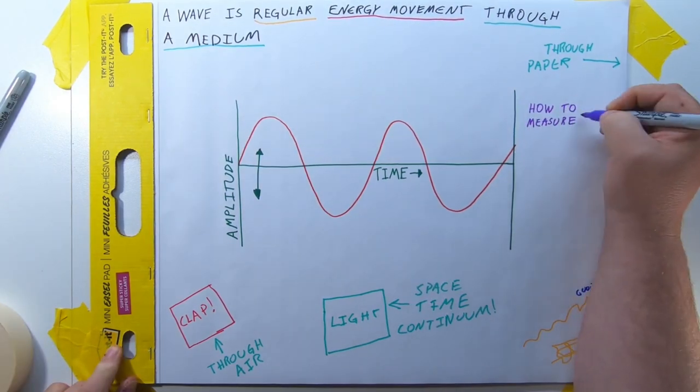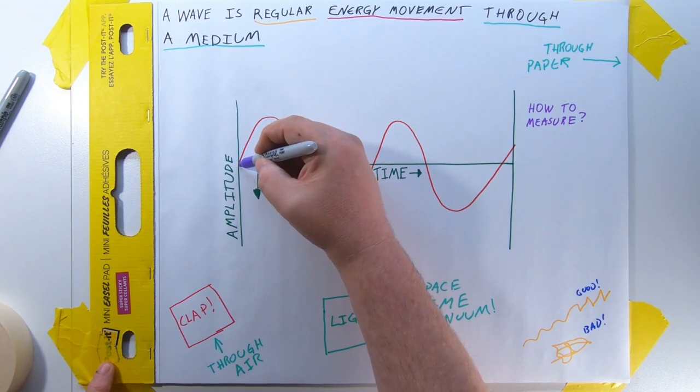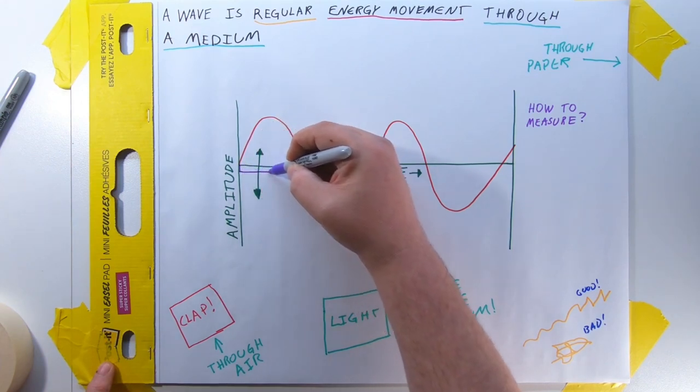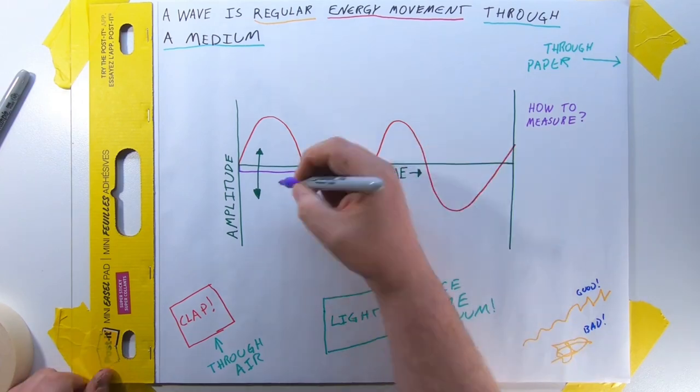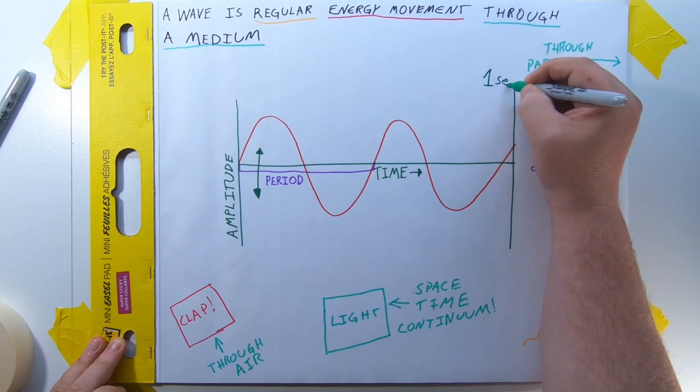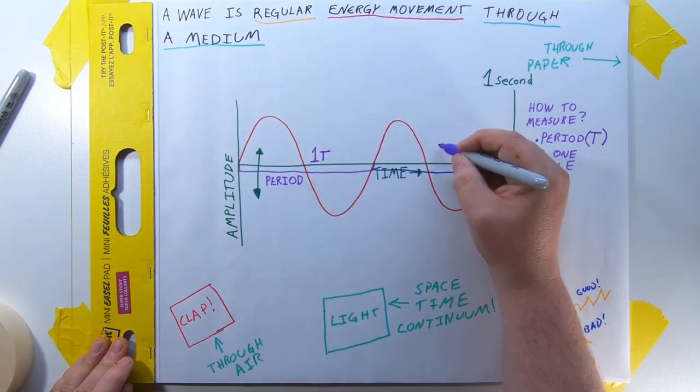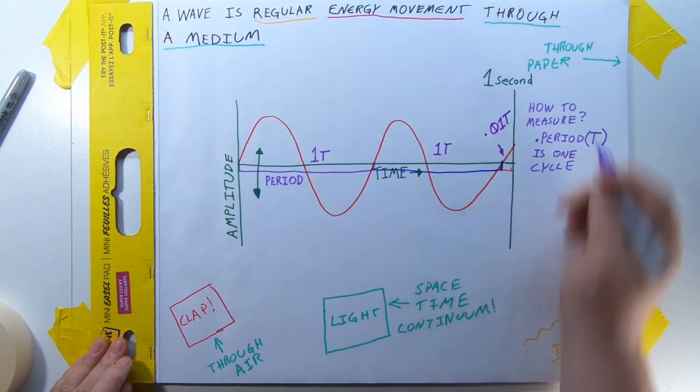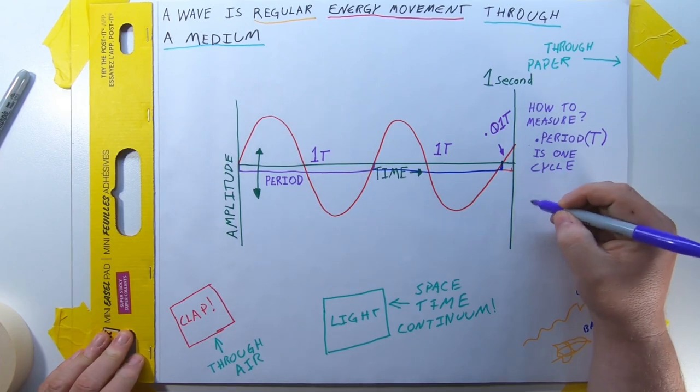So how do we measure it? Well, first, we need to actually count it. When a wave moves from the center to the peak, to the other peak, and then back to the center, that is a cycle or a period. So if this wave we're looking at is happening in a single second, I can count two cycles and a little bit of a cycle I'll call 0.01 cycles. The letter we use to represent a cycle is T, but don't worry about that for now.